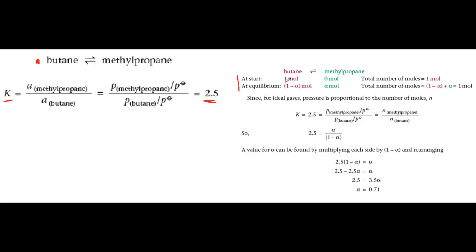Here are the starting amounts. We have one mole of butane, that's what we've been given, and because the reaction hasn't started, we have zero moles of methylpropane product.